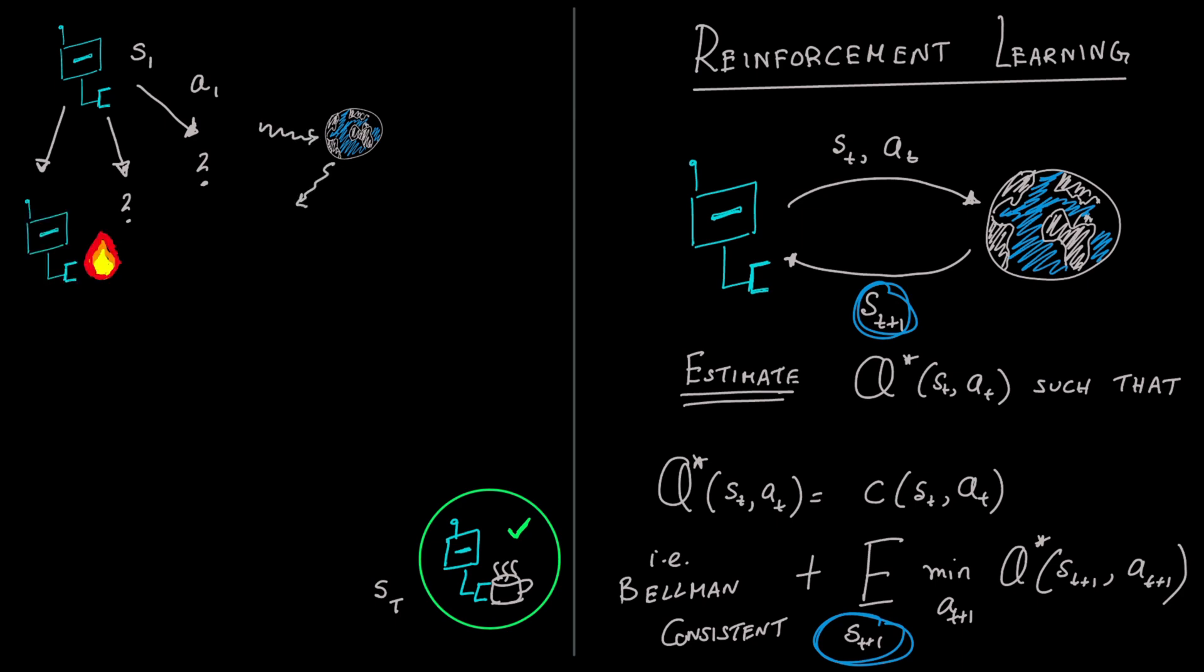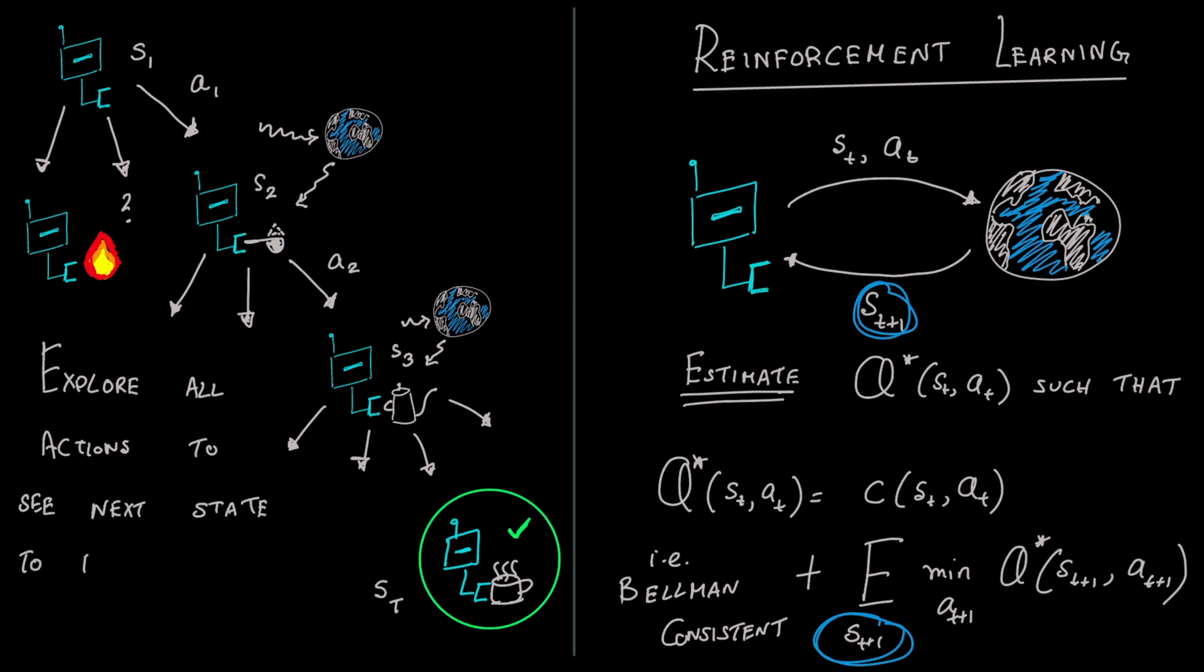Some of these actions lead to bad states, for instance, burning down the house. Eventually, through meticulous exploration, the robot figures out the sequence of actions that takes it to the goal state. What makes RL hard is that the robot must try out enough actions in the real world that can be expensive or even dangerous.